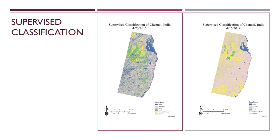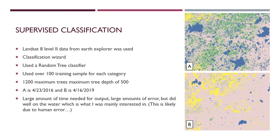This is my supervised classification. After spending far more time on these than I'd like to admit, I'm not super happy with the outcome. On the left in 2016 there's a large amount of misclassification with water, and on the right there's a large amount of misclassification with cultivated. I made over 100 different training samples for each category and used random trees as my classifier. In figure A you can see the three main reservoirs, and in B they're almost completely gone. Overall, the 2019 image came out more accurate for water, but classified a lot as either urban or cultivated when it wasn't, and the 2016 image classified a lot as water when I'm not sure what it was actually picking up.